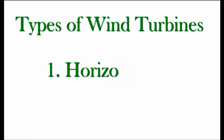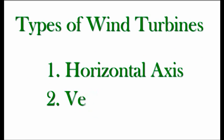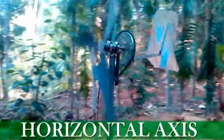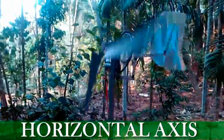Hey, New Physicist here. Wind turbines have two main design categories: horizontal and vertical axis.